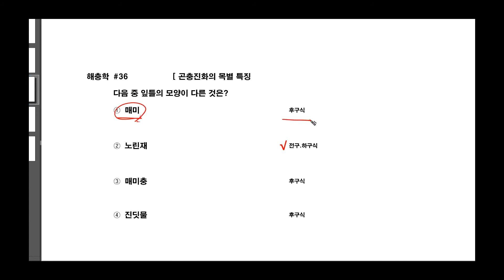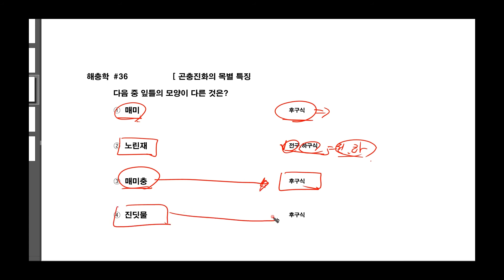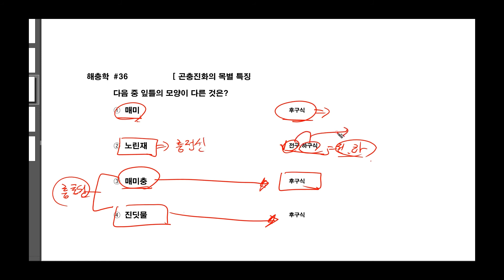매미류는 후구식입니다. 잎의 모양이 후구식이고요. 노린재는 전구 또는 하구식입니다. 노전하구요. 메미충 같은 경우는 후구식입니다. 진딧물 역시 후구식이고요. 이건 흡측성 해충이고요. 노린재 역시 흡측성 해충인데 특이하게 이것은 전구식 또는 하구식을 갖습니다.